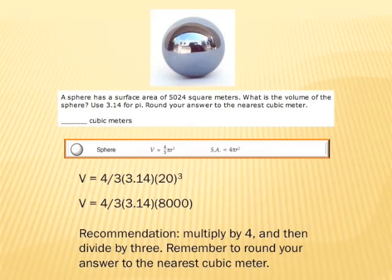Now all you have to do is take 4/3 times 3.14 times 8,000. The easiest approach, rather than converting 4/3 into 1.3333 repeating, is to multiply 3.14 times 8,000 by 4, and then divide by 3.